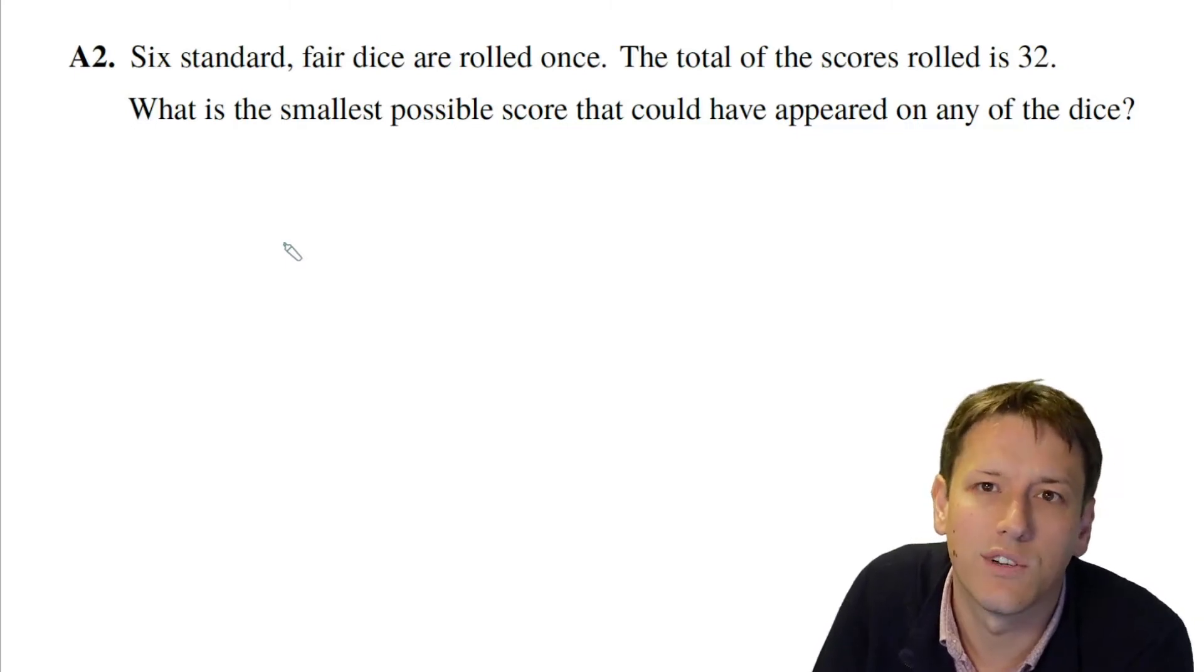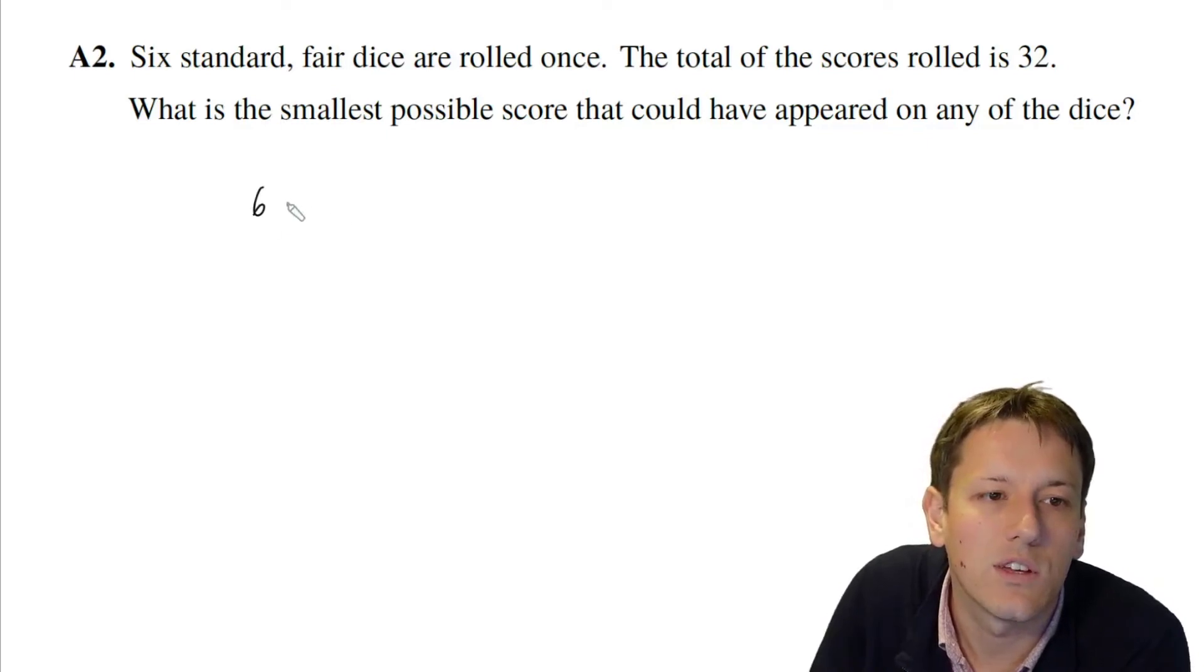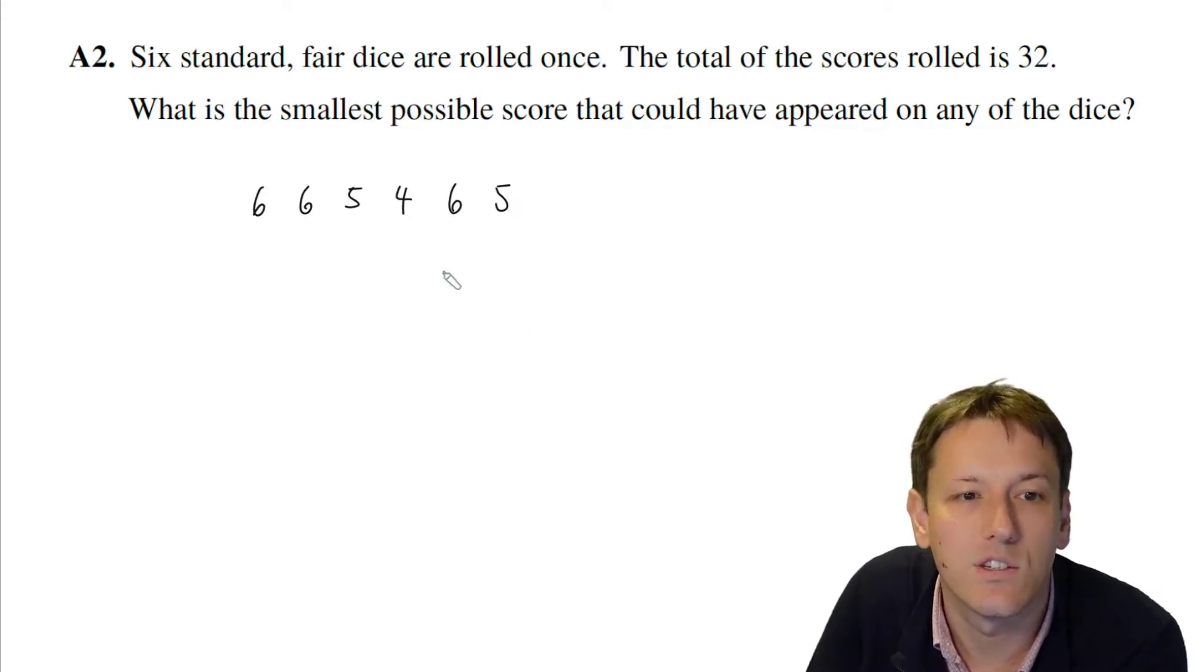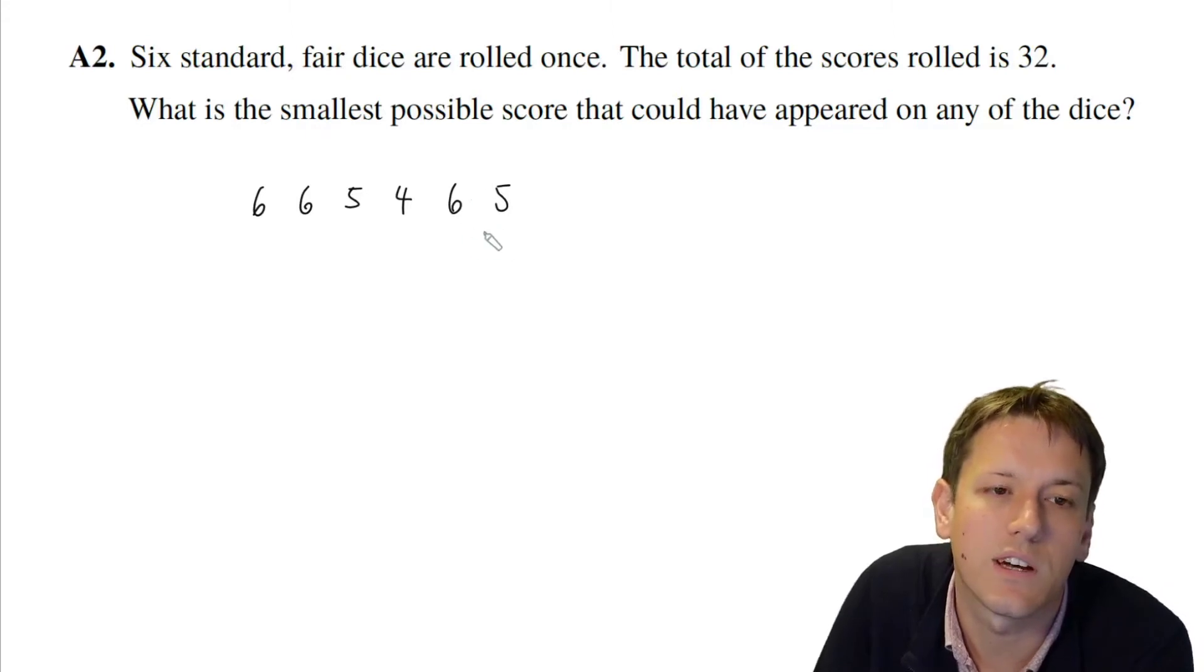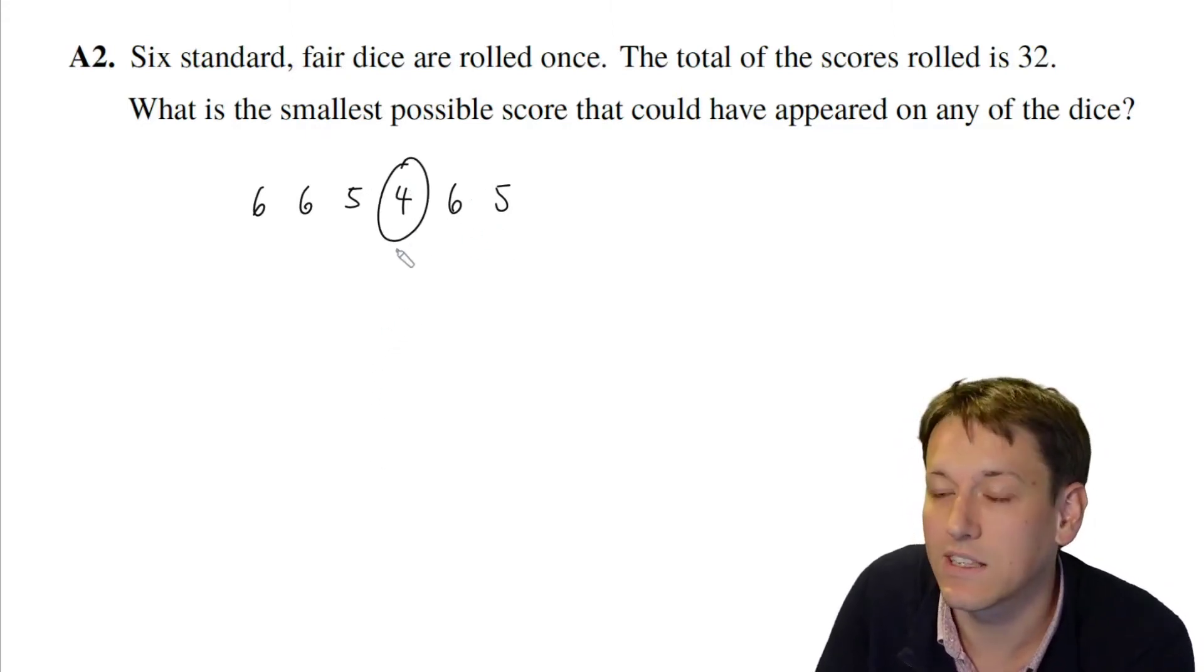Now to get a total of 32, we could do that in a number of different ways. You could have 6, 6, 5, 4—that would give us 21, and then another 6 is 27, and then a 5 is 32. There's lots of different ways I can do this, but if I want the smallest possible score on one of the dice, let's say I want to make this one as small as possible. It makes sense then I've got to try to use up the score on the other dice.